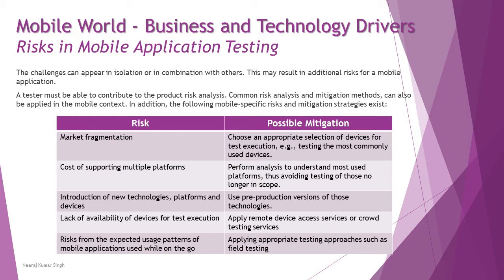Number one is market fragmentation, which is the most common risk in mobile application testing. If you miss out on the devices your audience is using, and by the time you complete building the app new devices may have entered the market. A possible way to mitigate this is to choose an appropriate selection of devices for test execution — for example, testing the most commonly used devices rather than targeting everyone.